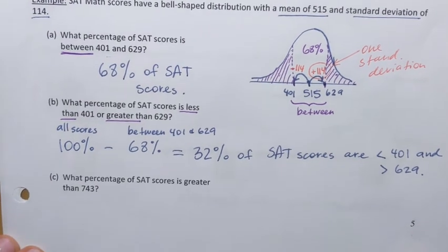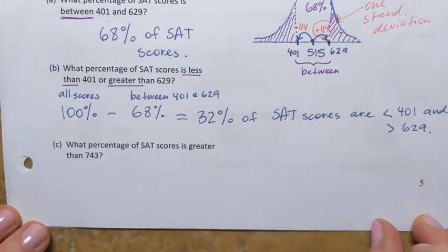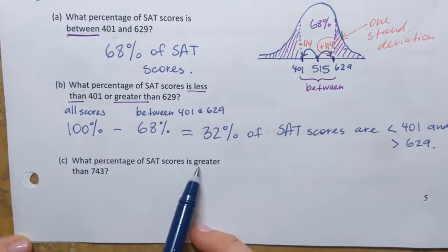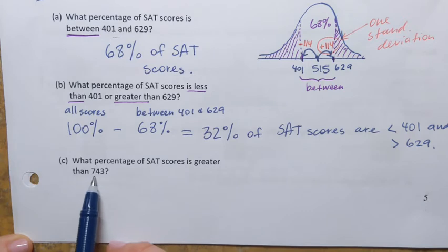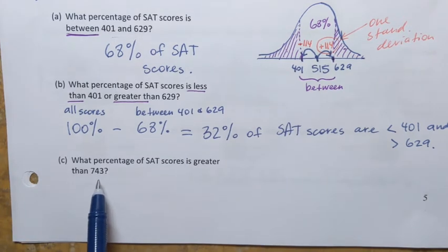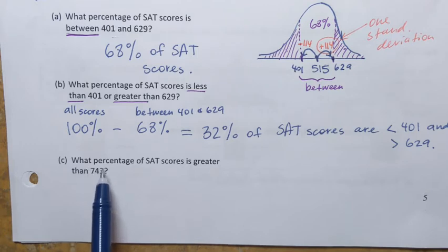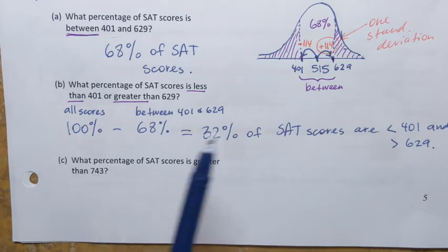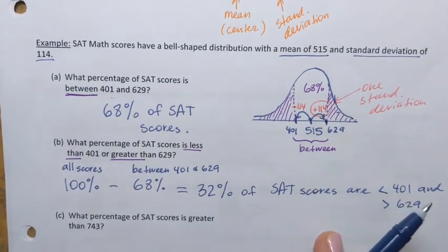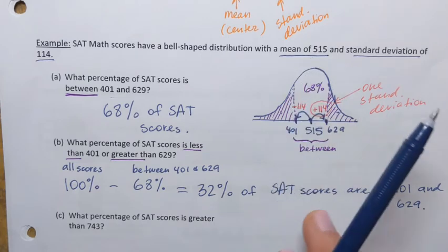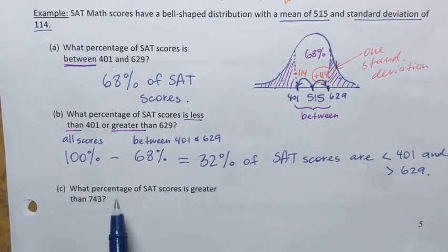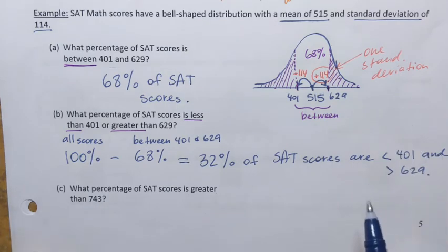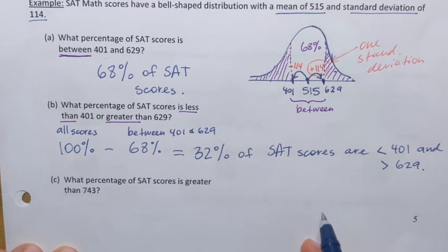The last question is: what percentage of SAT scores is greater than 743? First, we need to find how many standard deviations away from the mean 743 corresponds to. Obviously it's above the mean since the mean is 515, but how many standard deviations do we need to add to reach 743? Let's make another sketch.